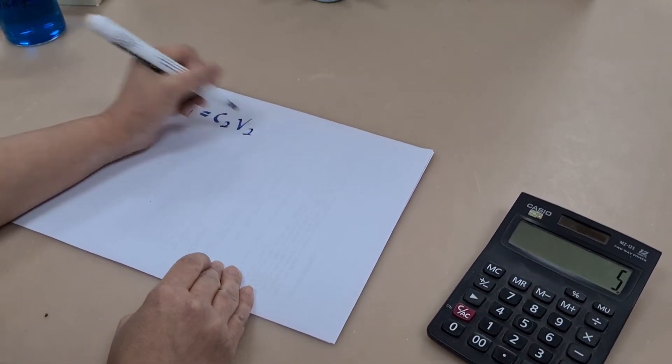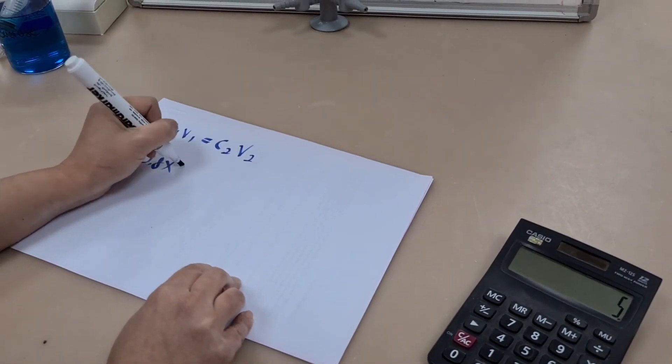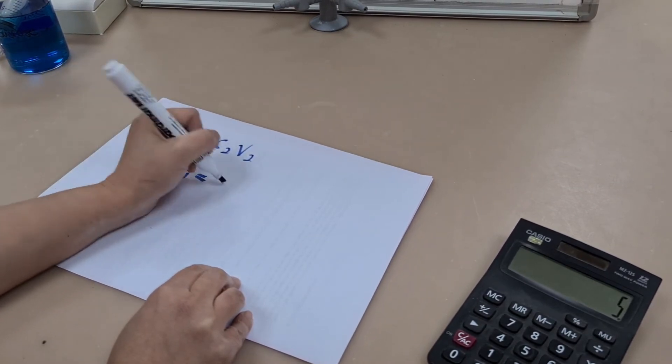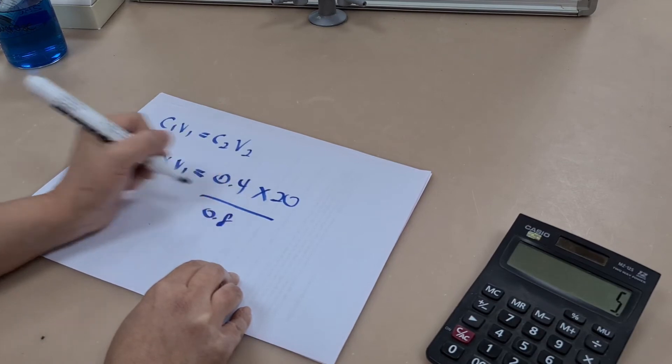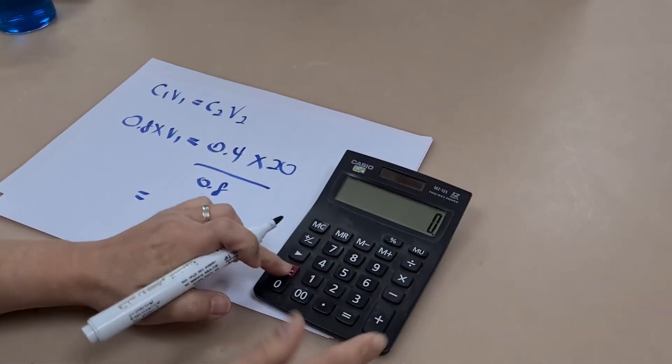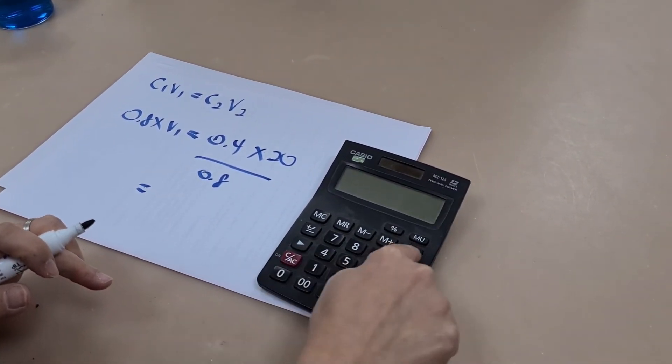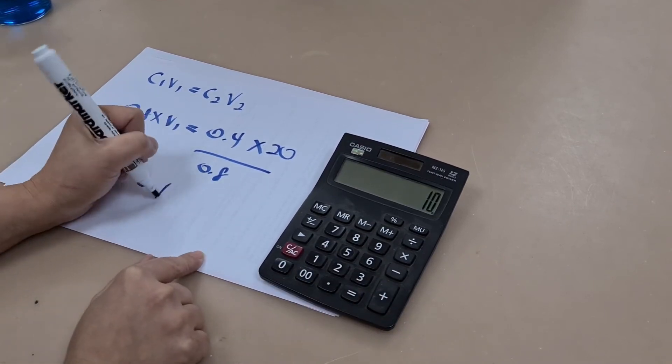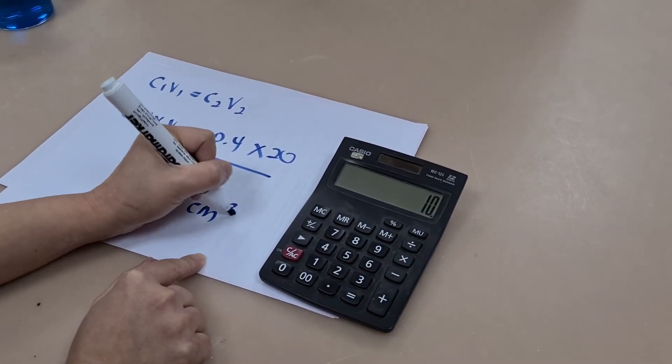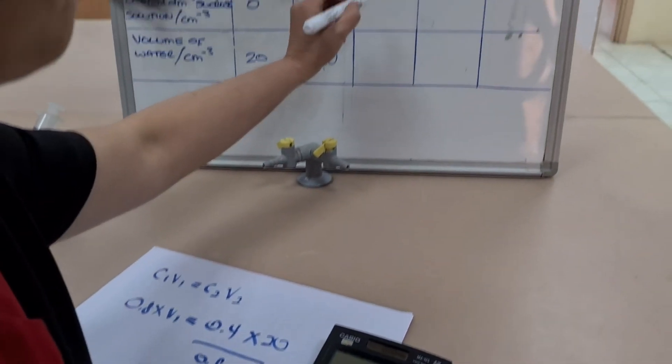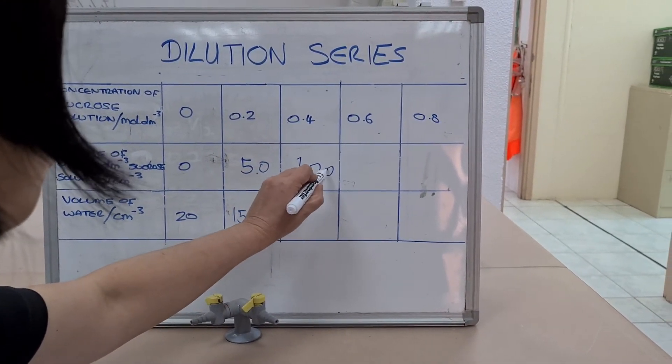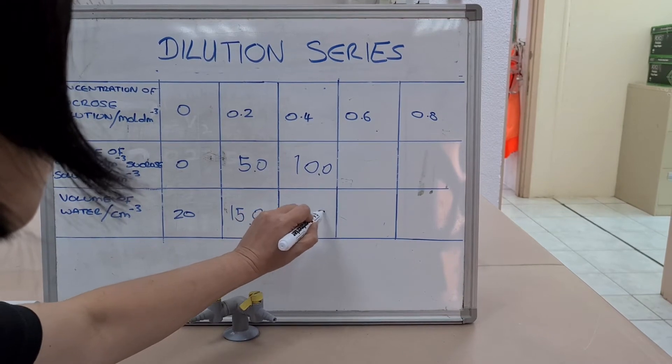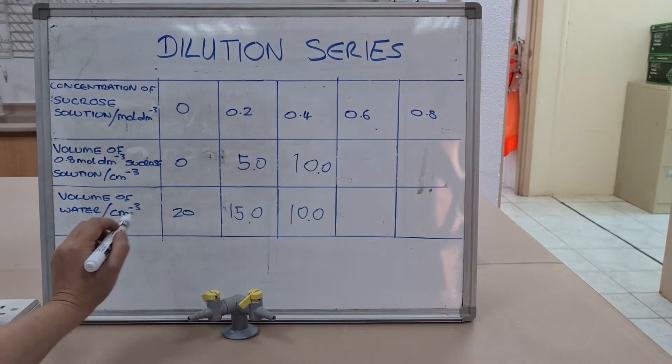Our C1 is 0.8 because that's our stock solution concentration. We want to make a 0.4 molar solution, so our C2 is 0.4. V2 remains 20 and we can see that we need to remove 10 cubic centimeters from our stock solution and add 10 cubic centimeters of water.